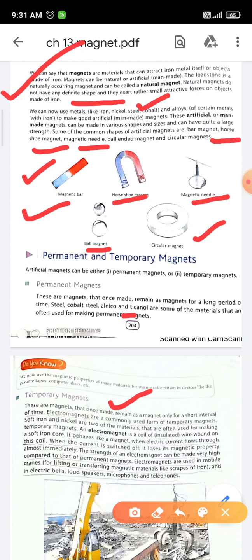An example of temporary magnets is the electromagnet. Materials needed for making temporary magnets are soft iron and nickel.